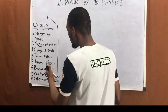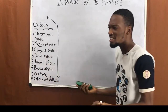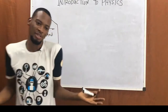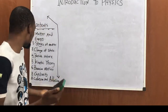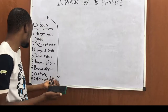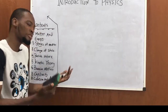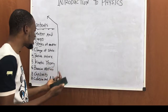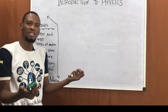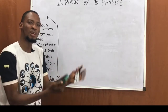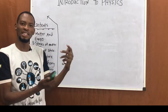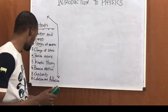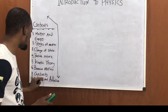Kinetic theory of matter states that matter is made up of many small particles that are in constant random motion. Brownian motion explains the movement of particles in a fluid as they collide with one another and the wall of the container or containing vessel.